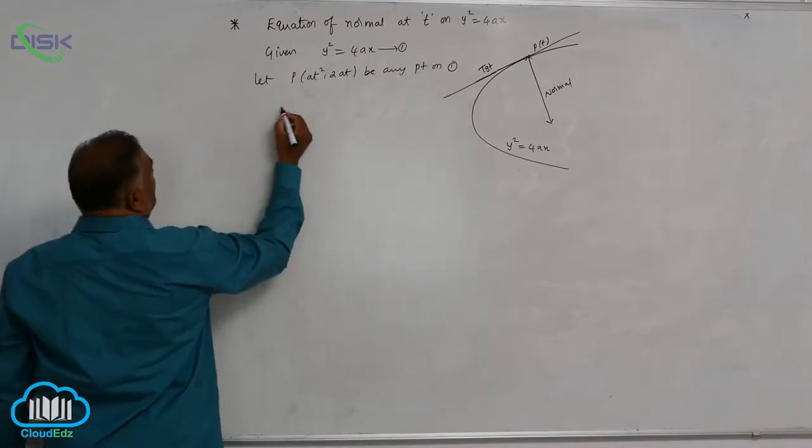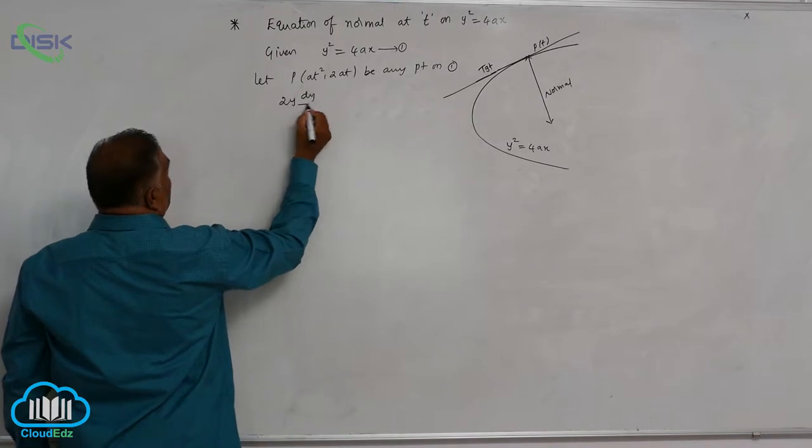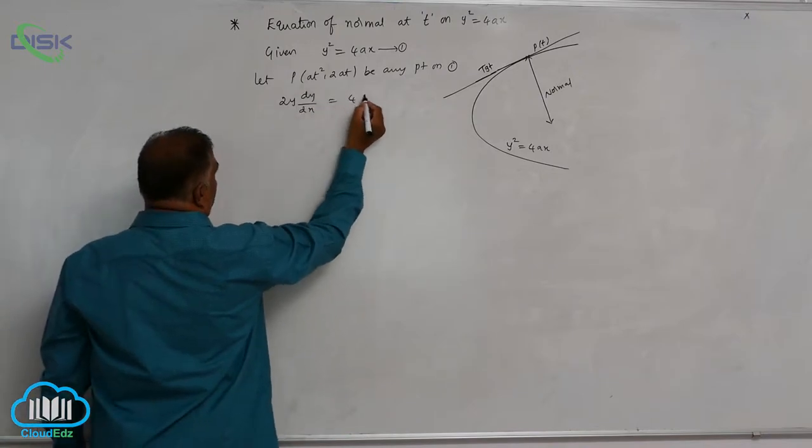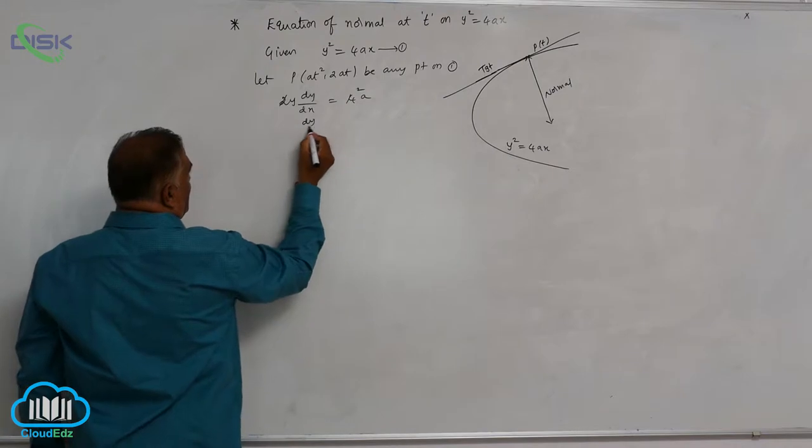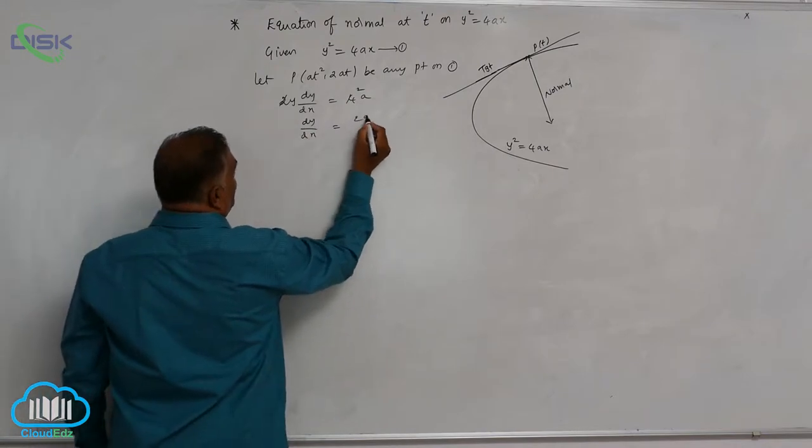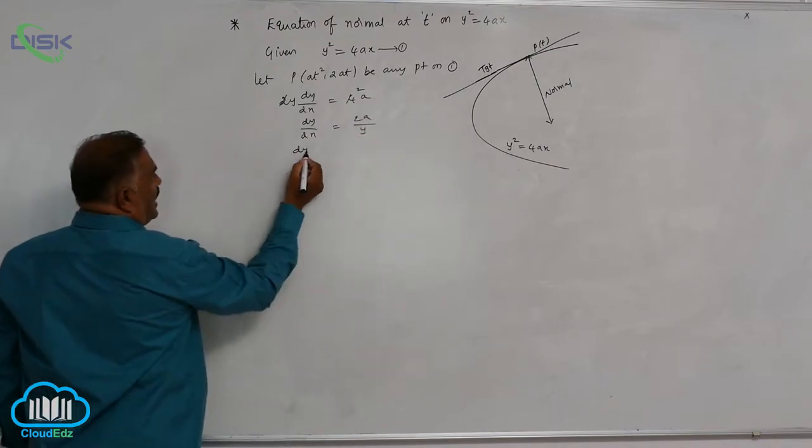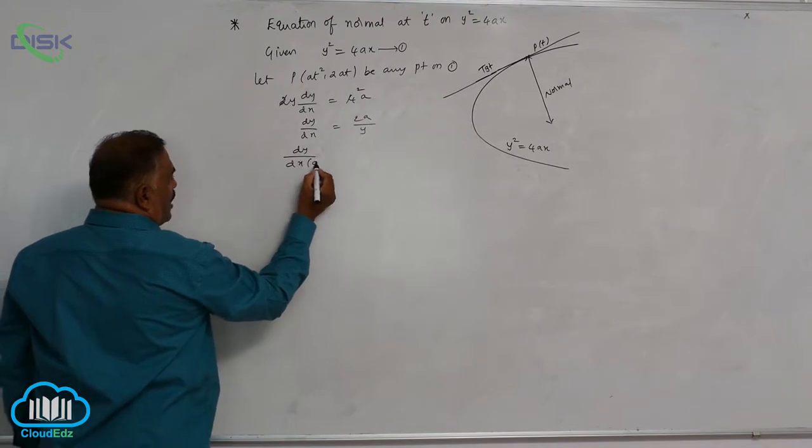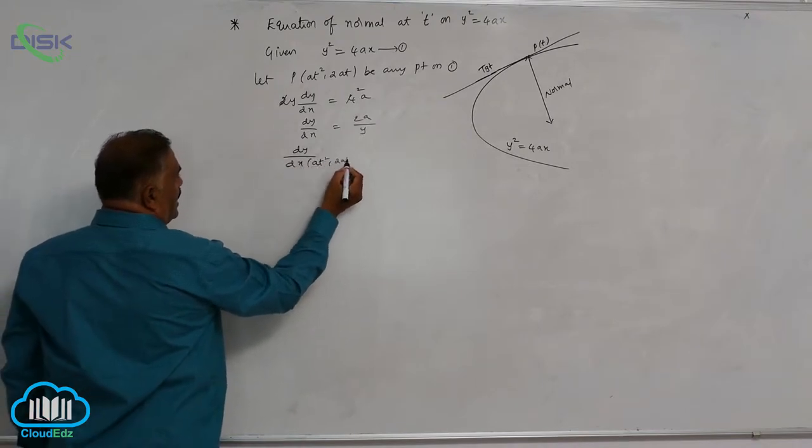Now differentiating, 2y dy by dx is equal to 4a. 2 gets cancelled here, dy by dx is equal to 2a divided by y. dy by dx at the point at square comma 2at.